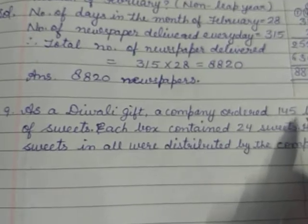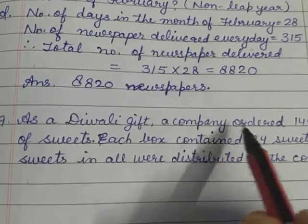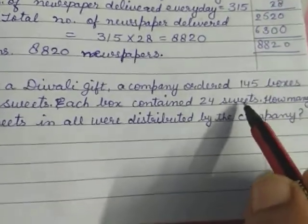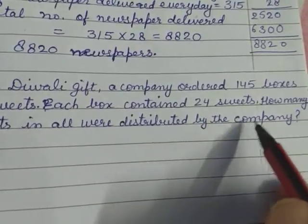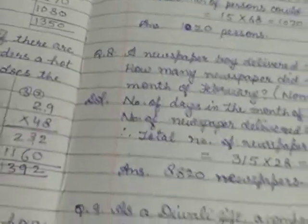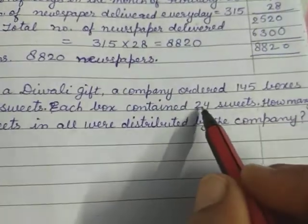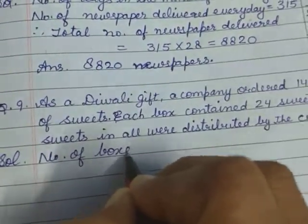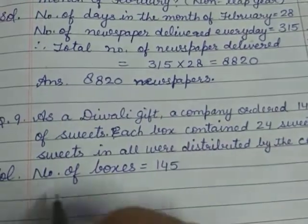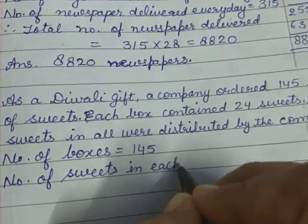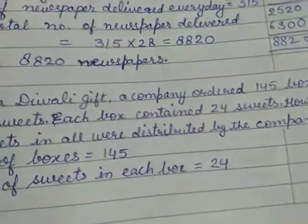Now last question. As a Diwali gift a company ordered 145 boxes of sweets. एक Diwali gift के लिए एक company order करती है 145 boxes sweets के. Each box contains 24 sweets और हर box में 24 sweets हैं. How many sweets in all were distributed by the company? तो कुल मिलाकर company ने कितनी sweets distribute की हैं? Number of boxes is equal to 145 and number of sweets in each box is equal to 24.